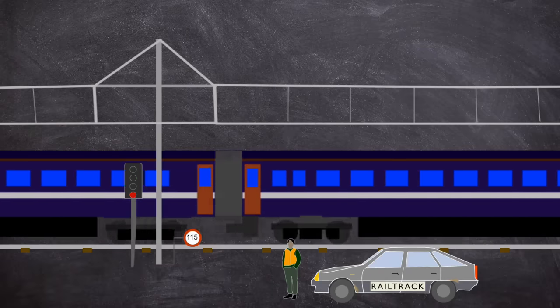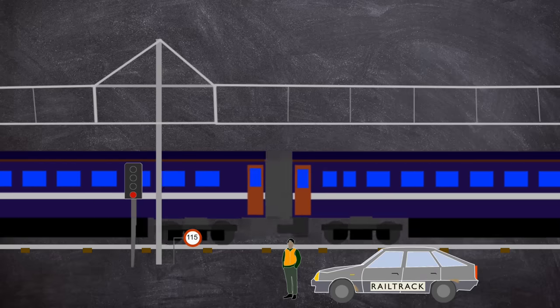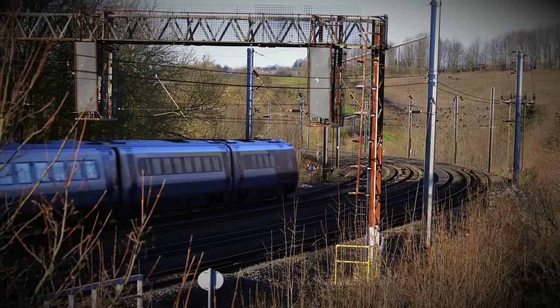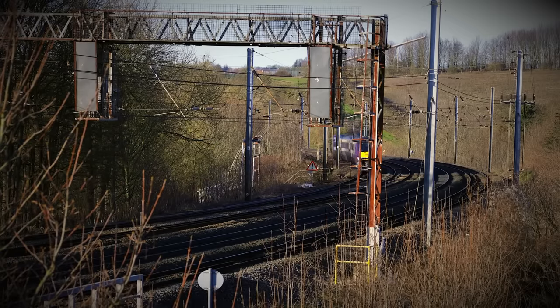The fast line through Hatfield has a maximum speed of 115 miles an hour. Around the implementation of privatisation of British Rail, track maintenance was taken over by an organisation called Rail Track. This was a group of companies that owned and maintained the tracks, signalling, tunnels, bridges, level crossings and nearly all the stations of the British Railway network.